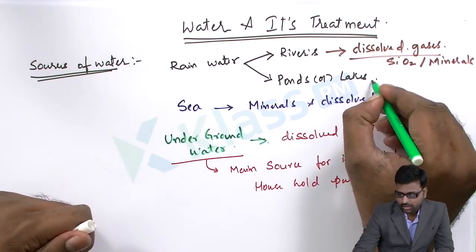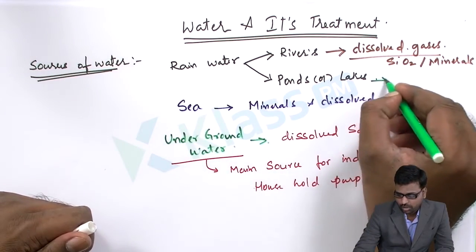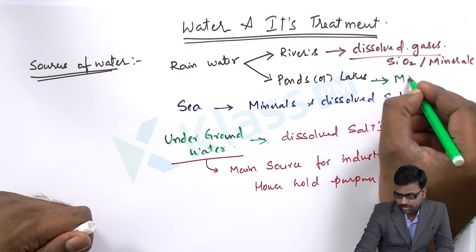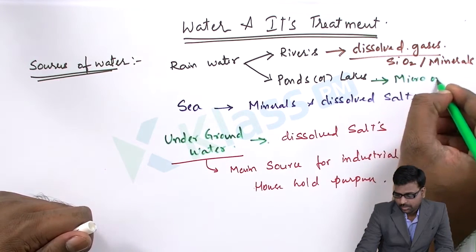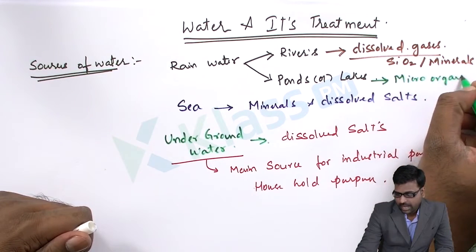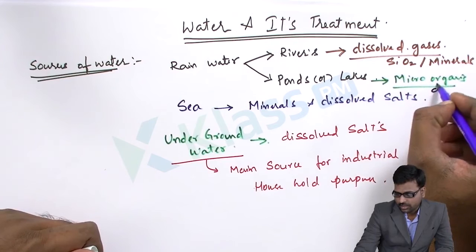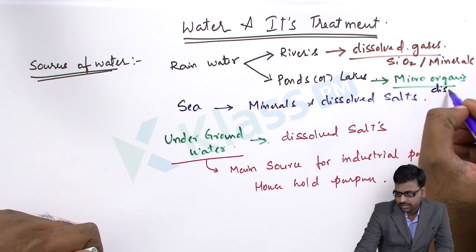Pond and lake water are the main sources of microorganisms as well as disease-causing insects.